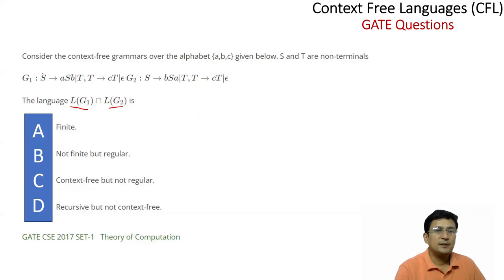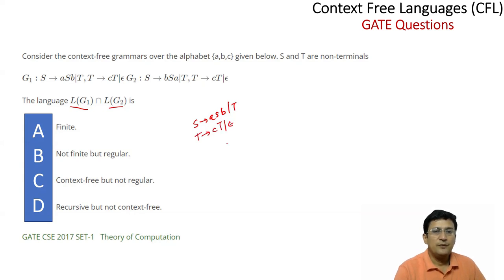Grammar G1 has the production S → ASB and S → T, where T → cT and T → epsilon. If we expand S using ASB, we get A, then S, then B. Applying S → T and T → epsilon, we get the string AB.